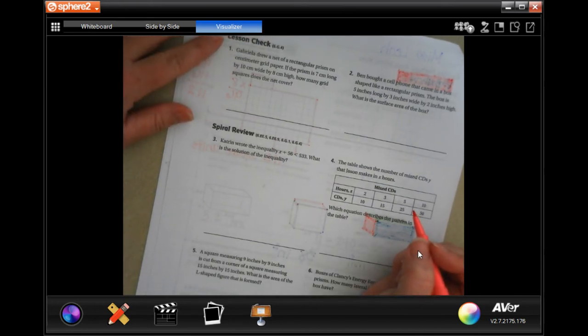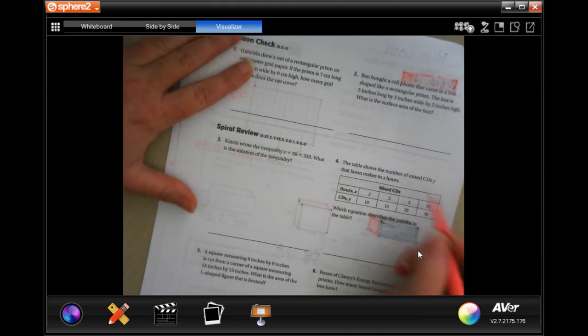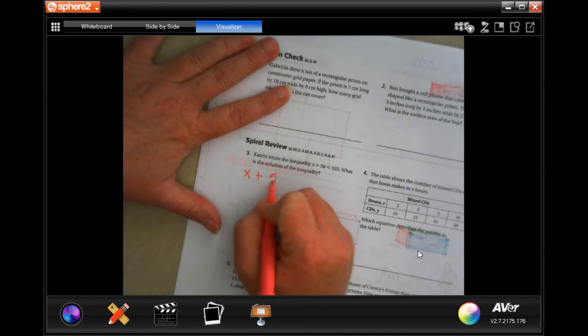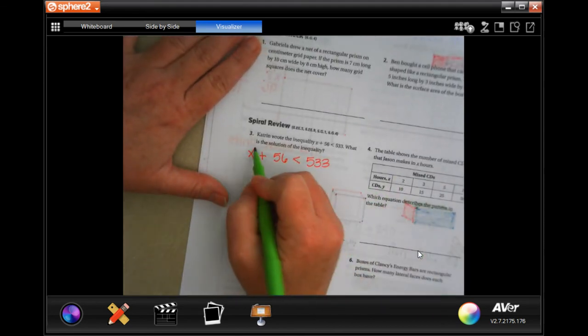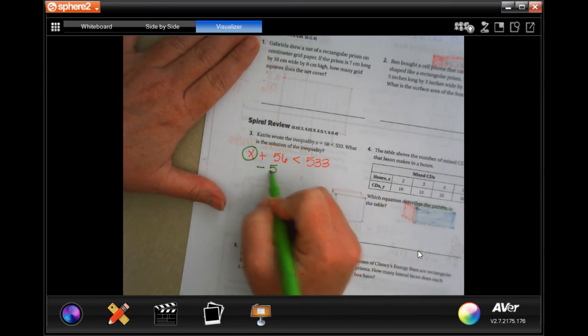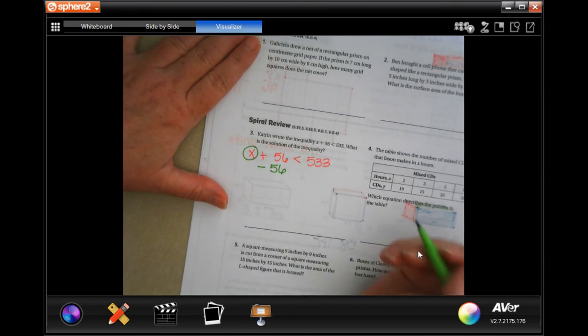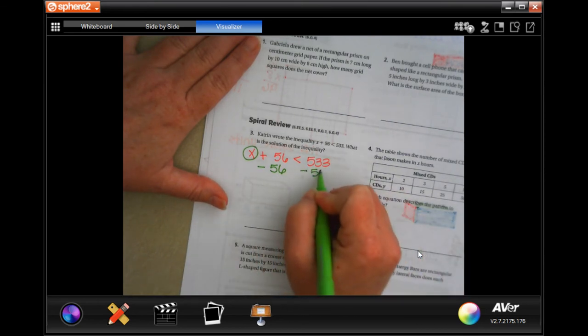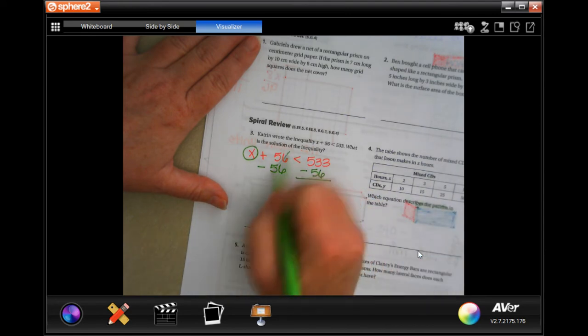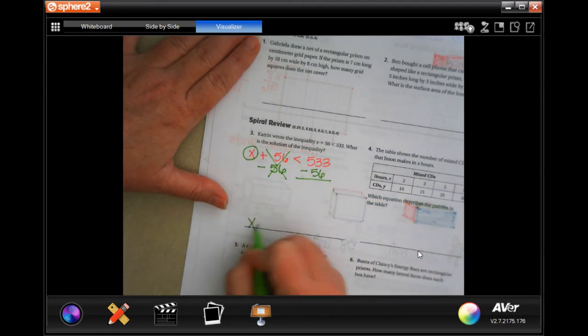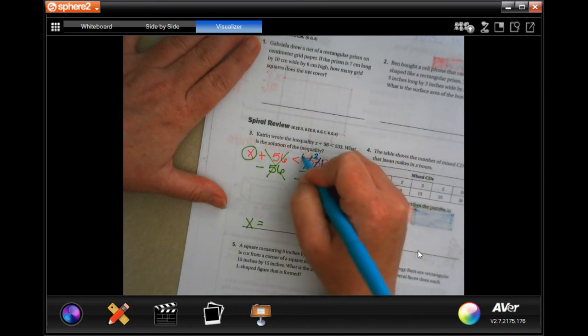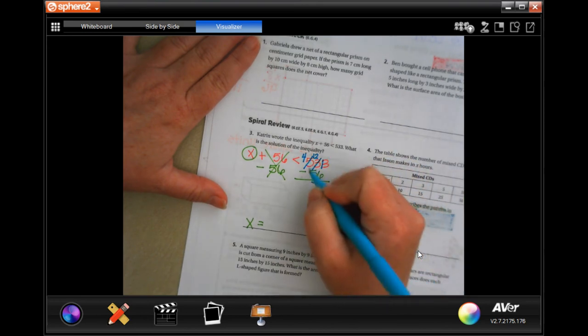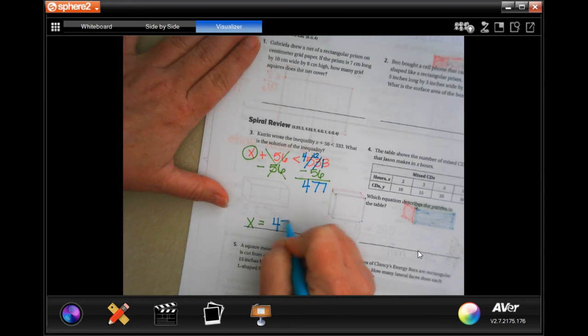Tatron wrote the inequality x plus 56 equals or is smaller than 533. What is the solution of the inequality? So, what we're going to do is we're going to put x plus 56 by 533 right there. Well, in order to get x alone, which is what I want, I need to do the opposite of the sign and the number that's attached to it. Whatever I do to this side, I also have to do to this side. Now, I'm just going to subtract. These guys cancel out and I'm going to do the subtraction. So, then I will get x equals whatever this subtraction is.